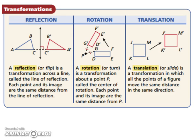A rotation, or turn, is a transformation about a point. This point is called the center of rotation, because each point and its image are the same distance from P. So like, G and G prime are the same distance from P.